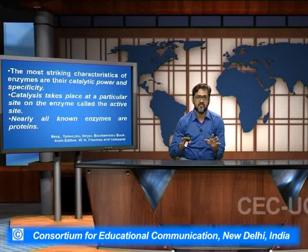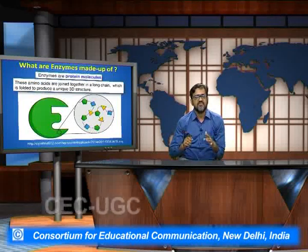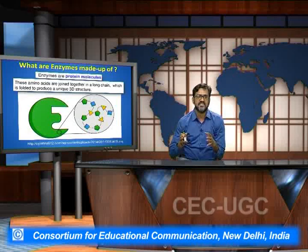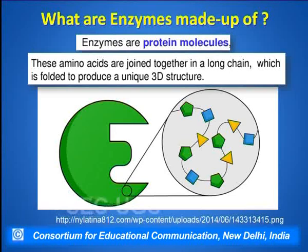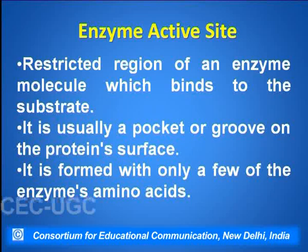Nearly all the enzymes are protein, except for a few examples like the ribozymes. The enzymes are made up of the protein molecule — a polypeptide chain which is made up of various amino acids, coiled in a unique three-dimensional structure, and some of these amino acids fall into the pockets which form the enzyme active sites.